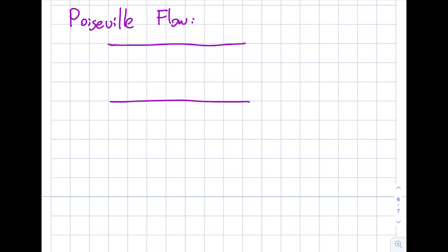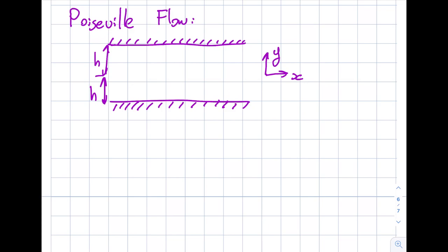Poiseuille flow — the name sounds fancy, but what it is is we have two parallel plates and the flow is generated by the existence of a pressure gradient or a pump. I'll call this height H. I'm going to call this direction X, going up Y, and into or out of the screen towards yourself is the Z direction.